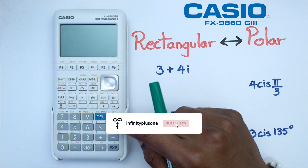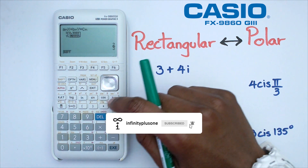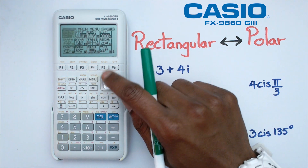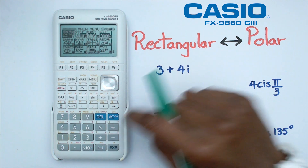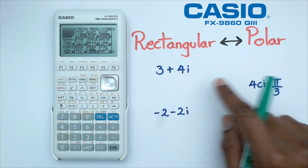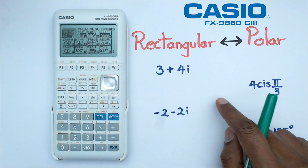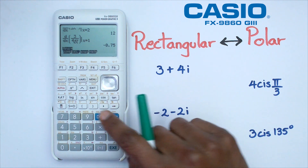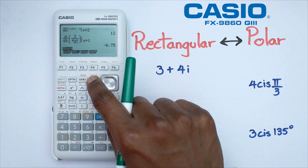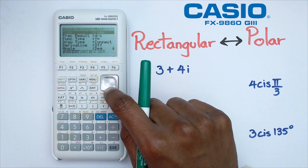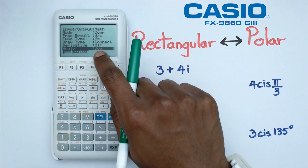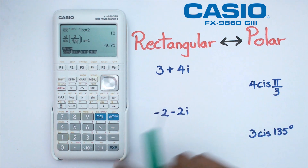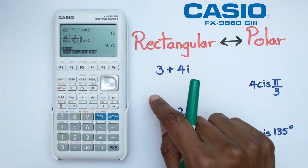The first thing we want to do is go into the main menu of the calculator and we're going to go into the run menu. For the first example I'm going to be working with radians, so I'd like to click on shift setup and just double check that my angle is changed to radians. So here we go, we've done that.